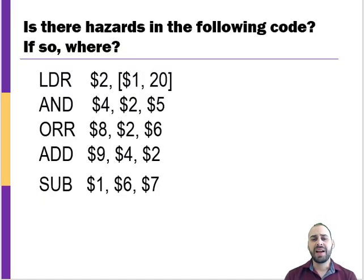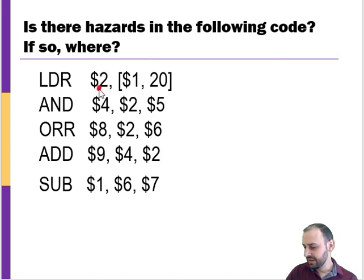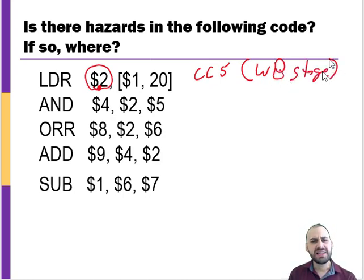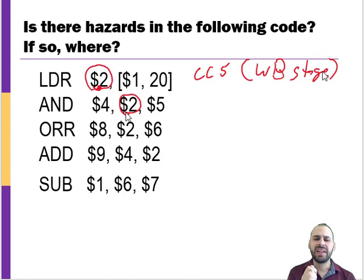Looking at the following code, we ask: is there a data hazard? We'll notice there is one — it has to do with a dependency related to this load instruction. The load instruction writes to register 2, and it's going to write to that register at clock cycle 5 during its write-back stage. We have a dependency where that register is being read.